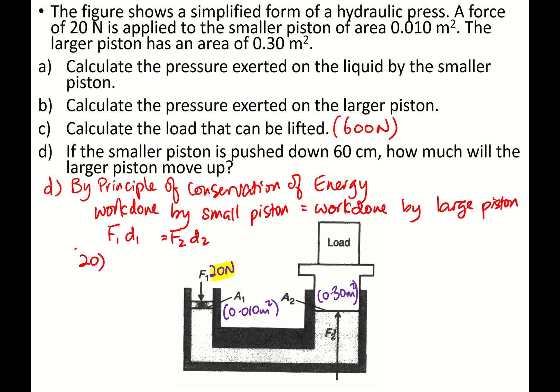So 20 times 60 cm. I can use 60 cm because I am not really going to calculate energy. I just have to make sure my final answer D₂ must be in centimeters. F₂ will be 600 D₂. So D₂ equals 2.0 cm.